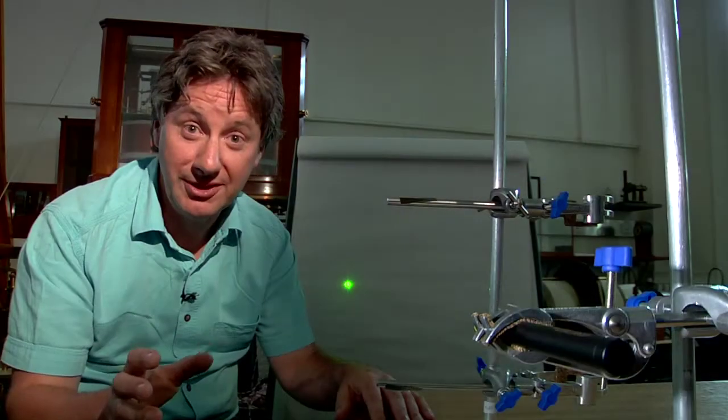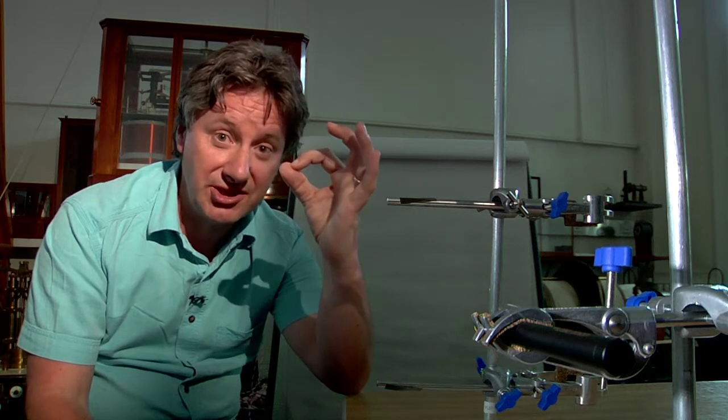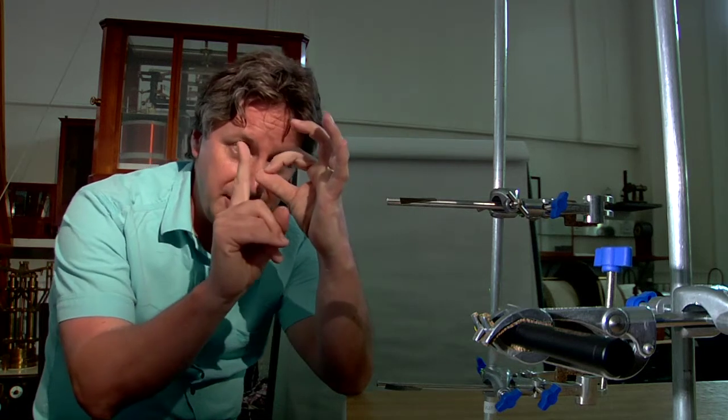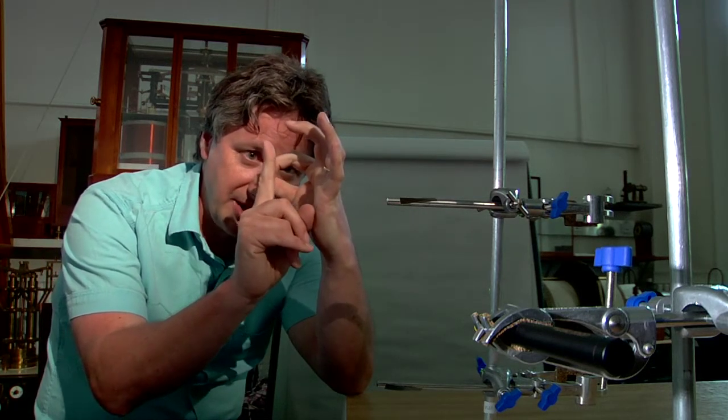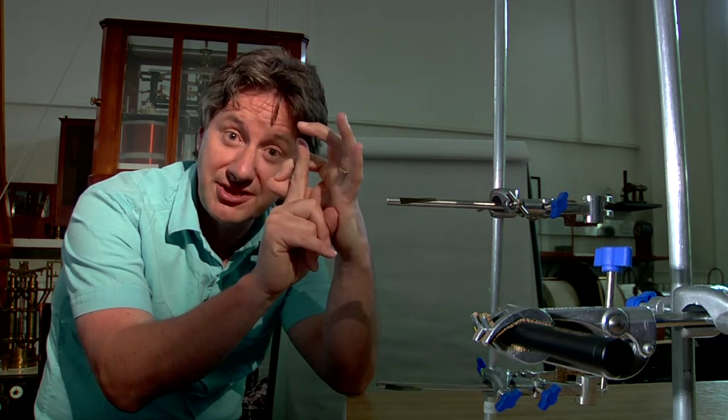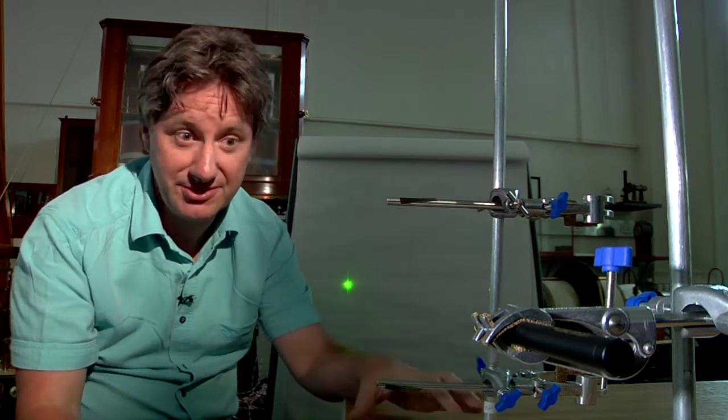Most people expect to see a shadow where the wire blocks some of the laser light. So if this represents the circle on the screen, then most people expect the wire to come in front of the spot and leave a shadow. Let's see what actually happens.